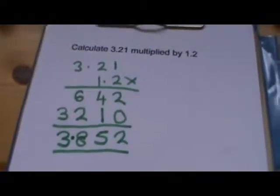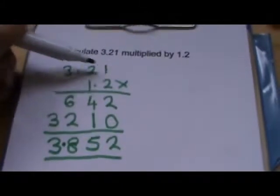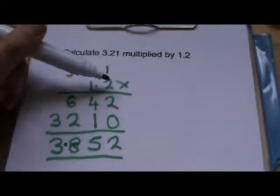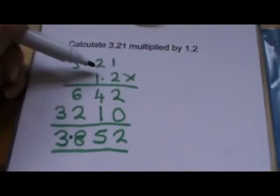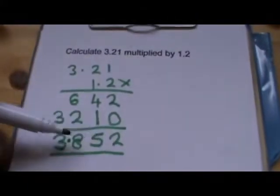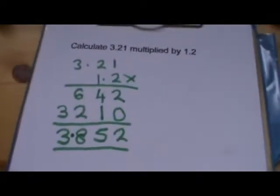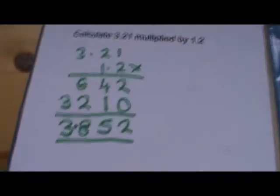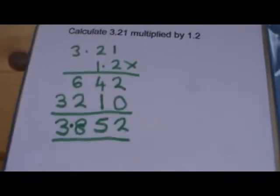Let's check that by counting the decimal places. In 3.21, there are two numbers that are after the point. And in the 1.2, there is one number that's after the point. So altogether there are three numbers that are after the point in the question. So there's got to be 1, 2, 3 numbers after the point in the answer. That's why the point goes between the 3 and the 8. So 3.21 times 1.2 gives us 3.825.